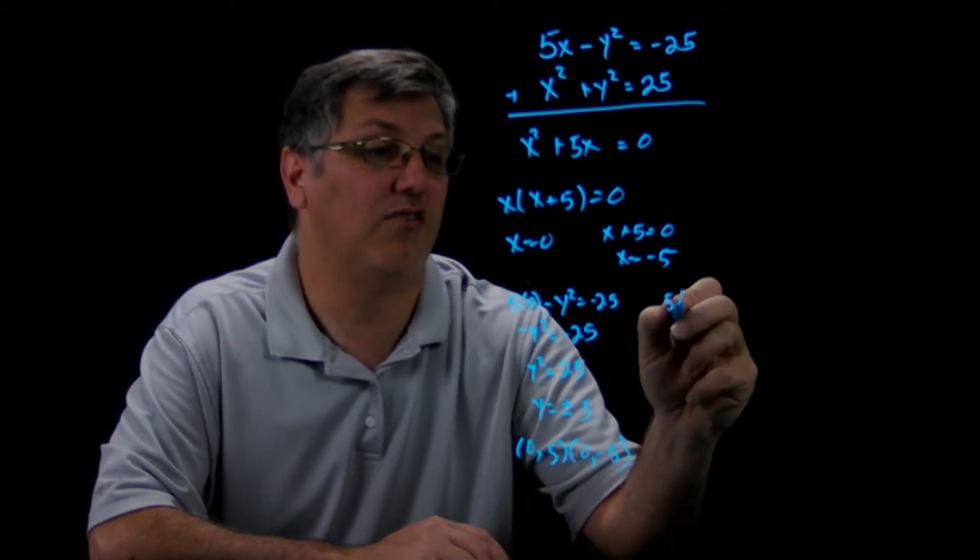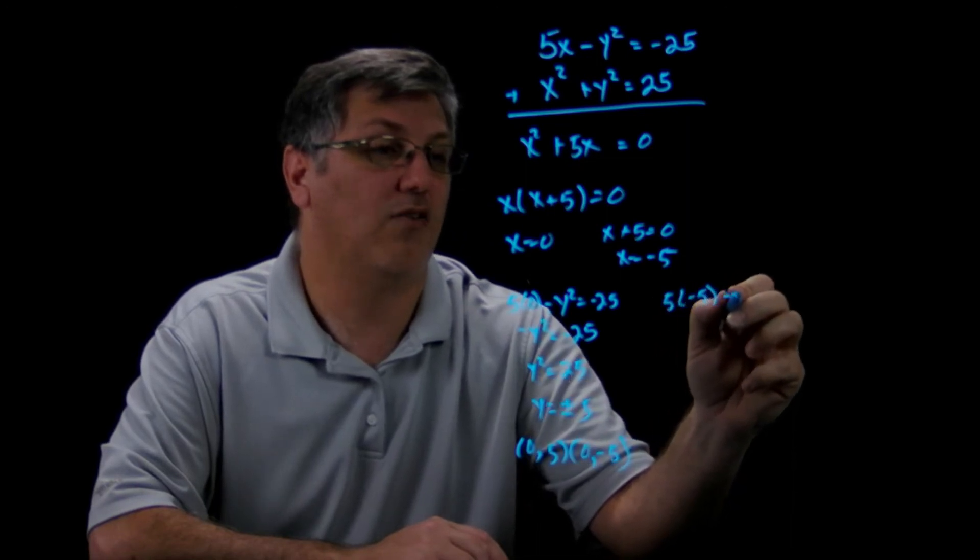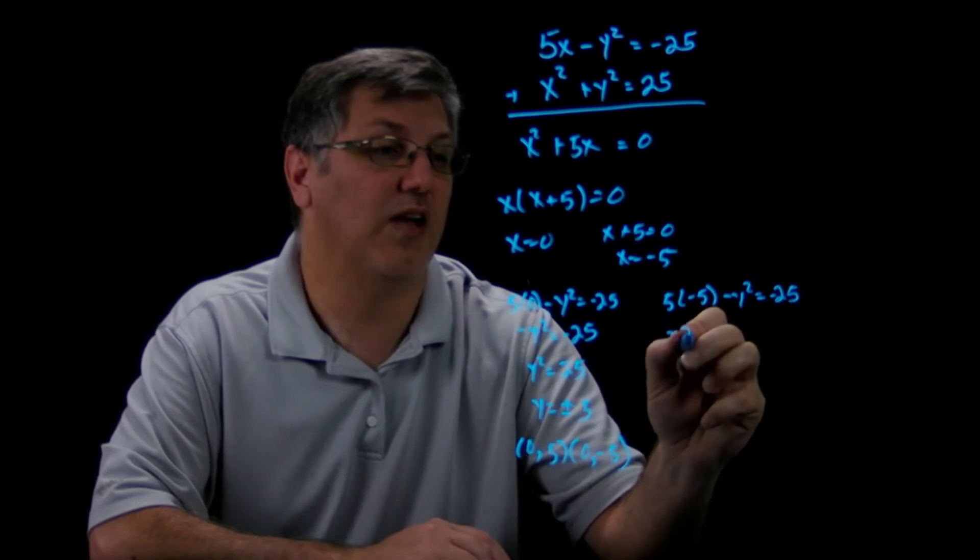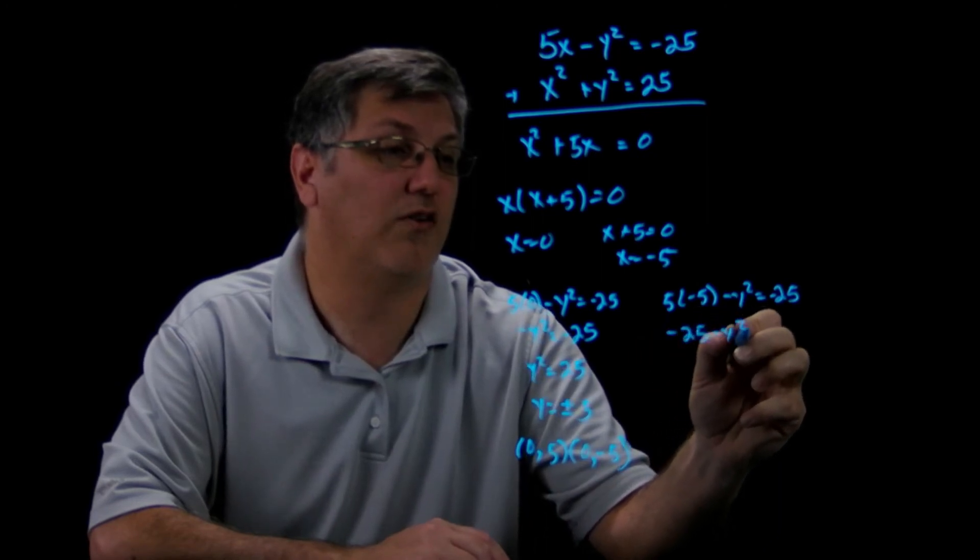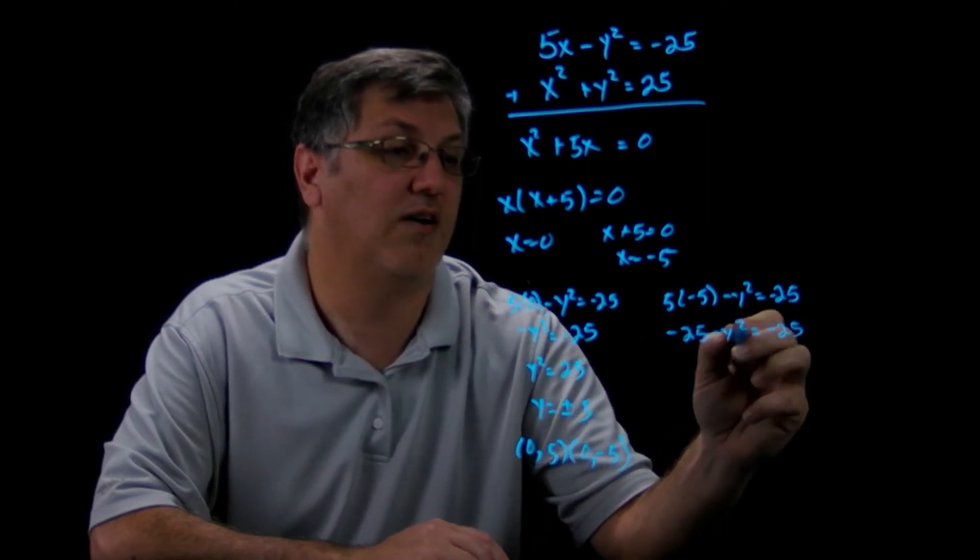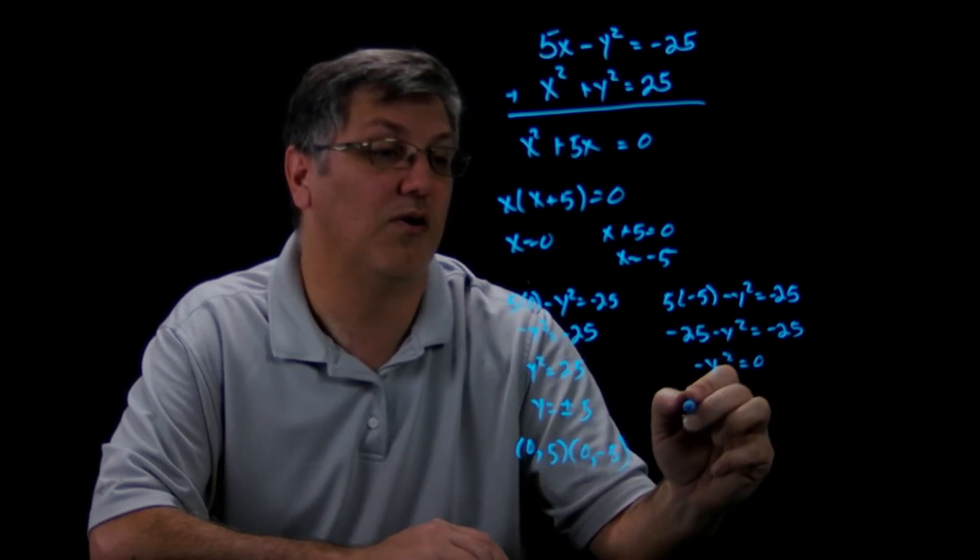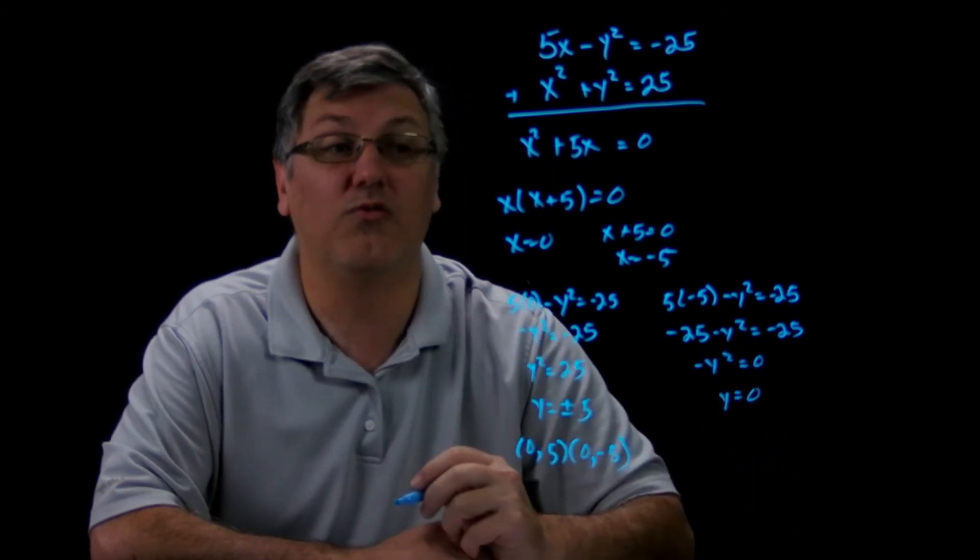So we're going to have 5 times negative 5 minus y squared equals negative 25. Well, this gives me negative 25 minus y squared equals negative 25. Add 25 to both sides, I get negative y squared equals 0.